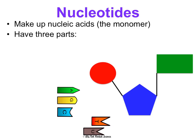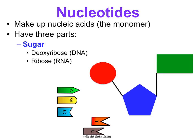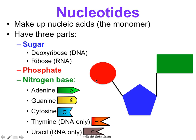Nucleotides make up nucleic acids — they are the monomer; nucleic acids are the polymer. Nucleotides have three parts: a sugar, which is either deoxyribose in DNA or ribose in RNA; a phosphate; and a nitrogen base. There are five different nitrogen bases: adenine, guanine, and cytosine, found in both DNA and RNA; thymine, which is only in DNA; and uracil, which is only in RNA. This is one way we can distinguish DNA from RNA.